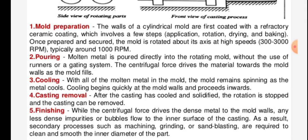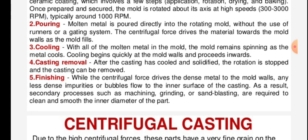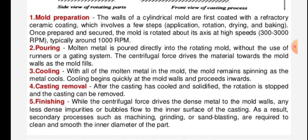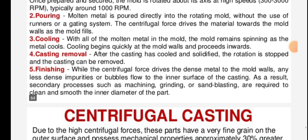After the casting has cooled and solidified, the rotation is stopped and the casting can be removed. While the centrifugal force drives the dense metal to the mold walls, any less dense impurities or bubbles flow to the inner surface of the casting. As a result, secondary processes such as machining, grinding, or sand blasting are required to clean and smooth the inner diameter of the part.